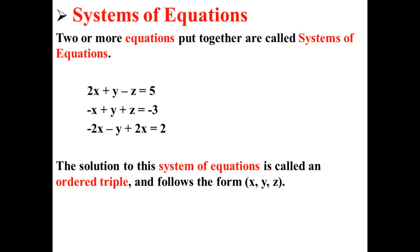The solution to this system of equations is called an ordered triple and follows the form x comma y comma z. So the solution to this system of equations is the ordered triple 2, 0, negative 1, where x is 2, y is 0, and z is negative 1.